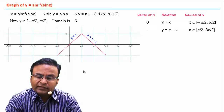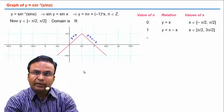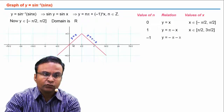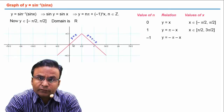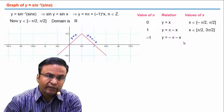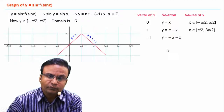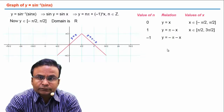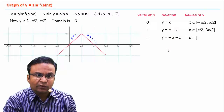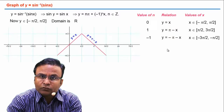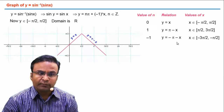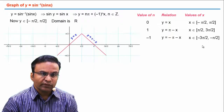For n = -1, the relation is y = -π - x. Using the limitation on y, we can calculate that x belongs to [-3π/2, -π/2]. This is a straight line with slope -1 for this interval, and we draw the graph accordingly.